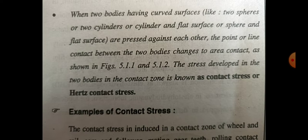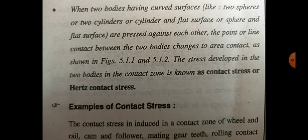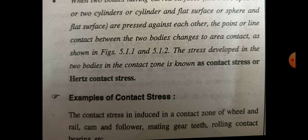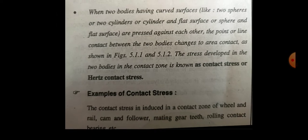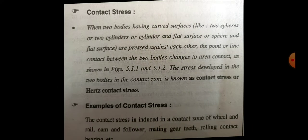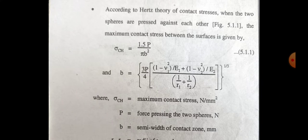Once again, when two bodies' surfaces are pressed together at the point of contact, the stress developed is called contact stress. Examples include contact stress induced in the contact zone of wheel and rail, cam and follower, mating gear teeth, and rolling contact bearings.